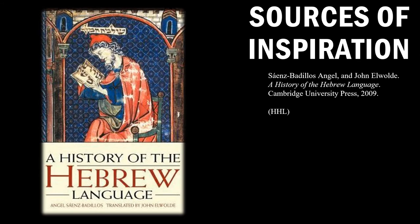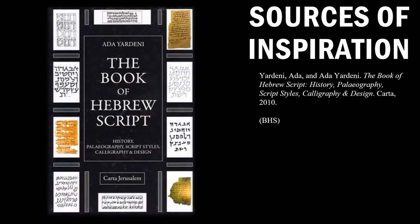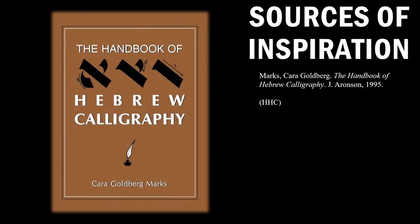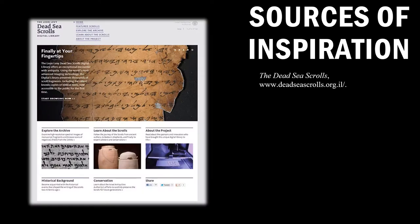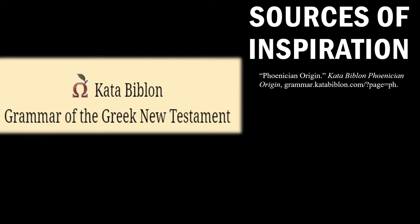I want to refer to a few sources of particular importance for this project. The first is A History of the Hebrew Language, which I call HHL. The second is The Book of Hebrew Script, referred to as BHS. The Handbook of Hebrew Calligraphy as HHC. There's also Jeff A. Benner and his Ancient Hebrew Research Center. The Dead Sea Scrolls Library is also super helpful — I use it in all my projects. And lastly, an article called Kata Beblon, which goes really in depth on the Phoenician origin as well as Proto-Sinaitic and Paleo-Hebrew discoveries.